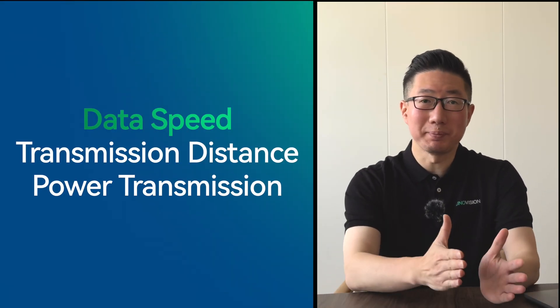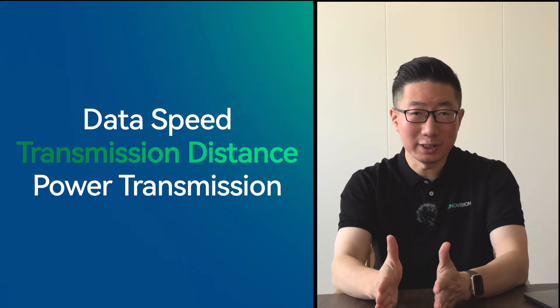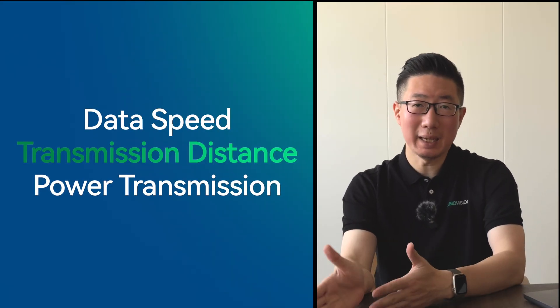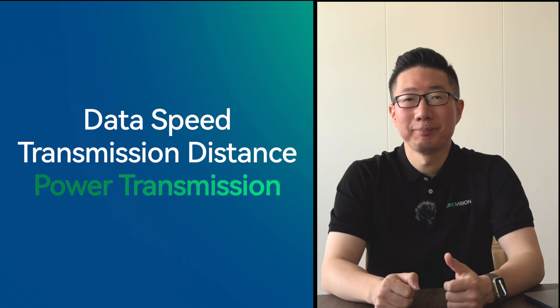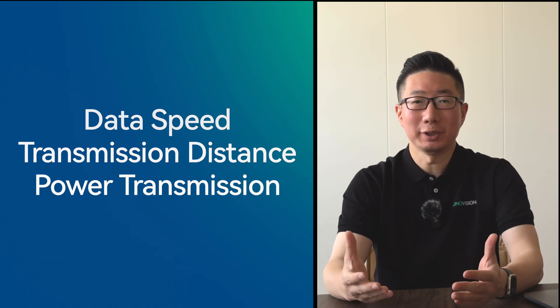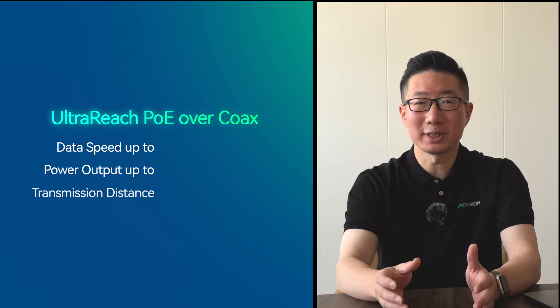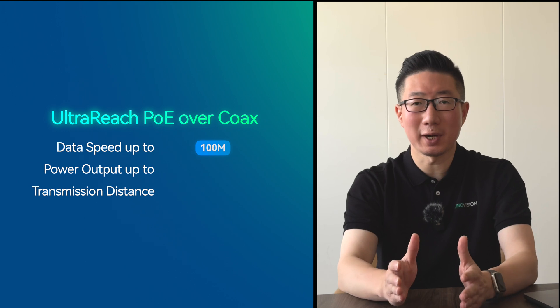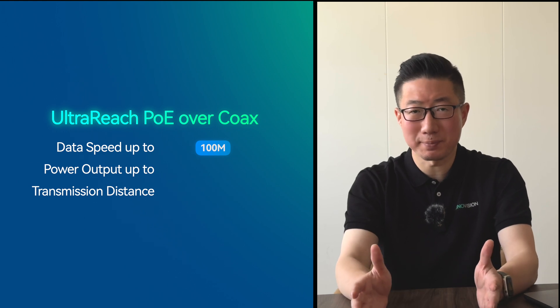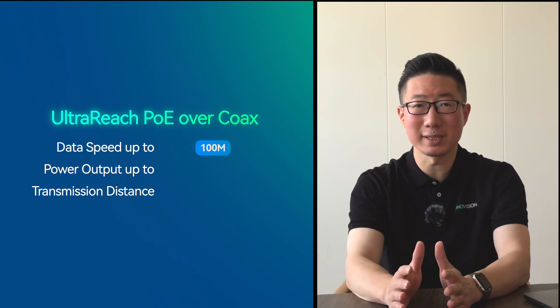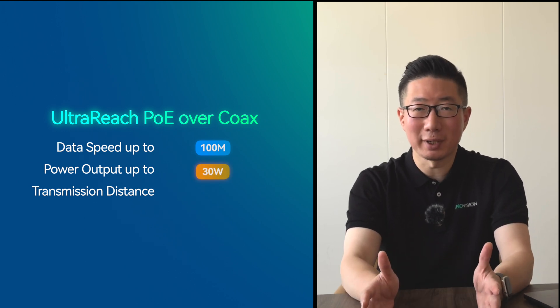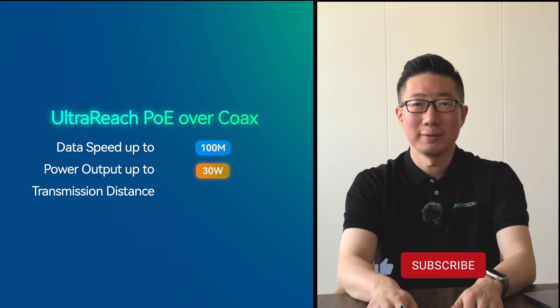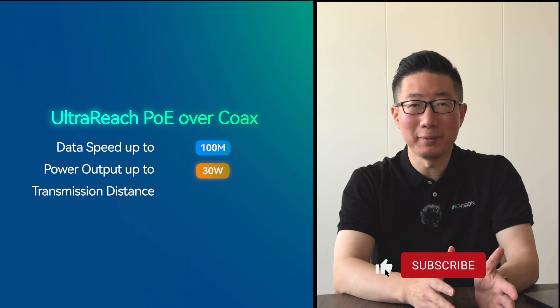Let's see how they compare when it comes to speed, distance, and power. The UltraHPO UR Coax supports data transfer speeds up to 100 Mbps with a power output up to 30W.